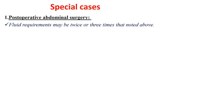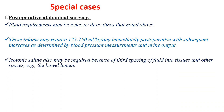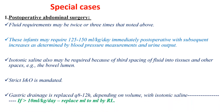For special cases, the first is post-operative abdominal surgery. In these cases, fluid requirements may be two or three times that noted above. These infants may require 120–150 ml per kg per day immediately post-operatively, with subsequent increases as determined by blood pressure measurement and urine output. Isotonic saline may also be required because of third-spacing of fluid into tissues and other spaces. Strict input and output measurement must always be followed. If there is gastric drainage, it should be replaced every 8–12 hours — if significant or more than 10 ml per kg per day, replace ml for ml with Ringer's lactate every 8–12 hours.